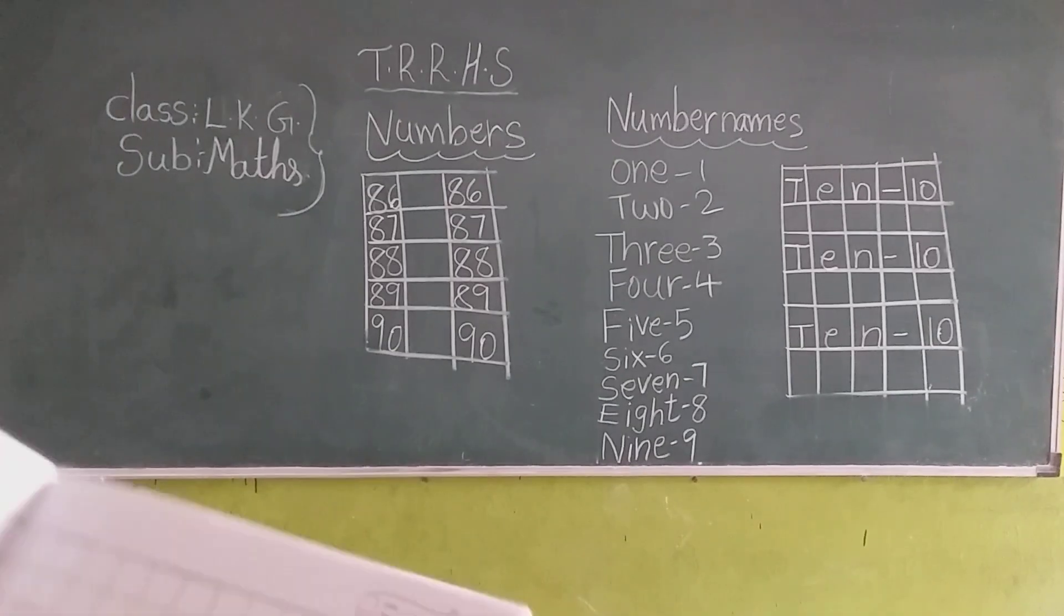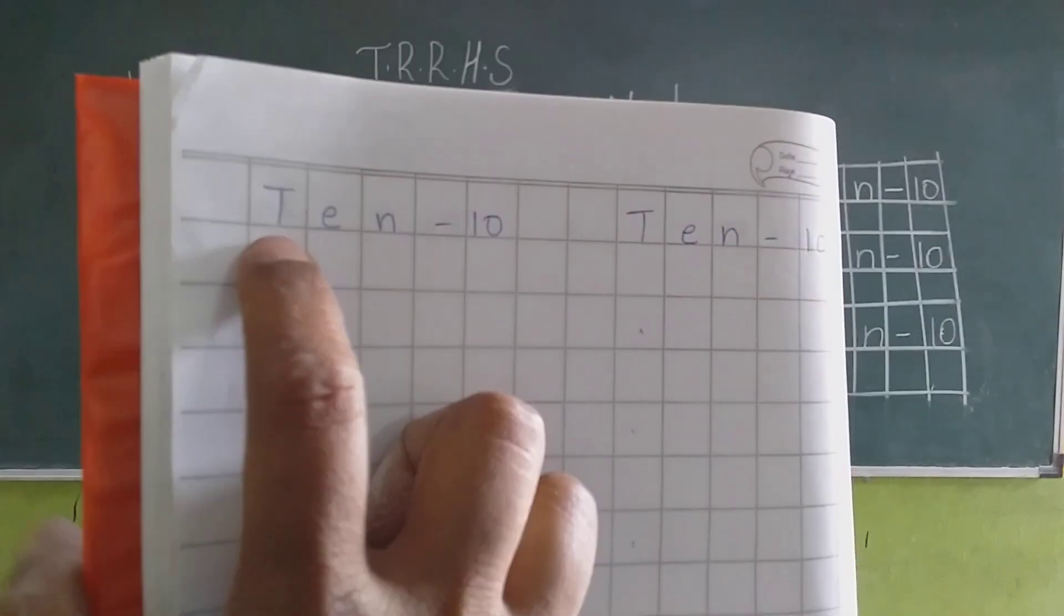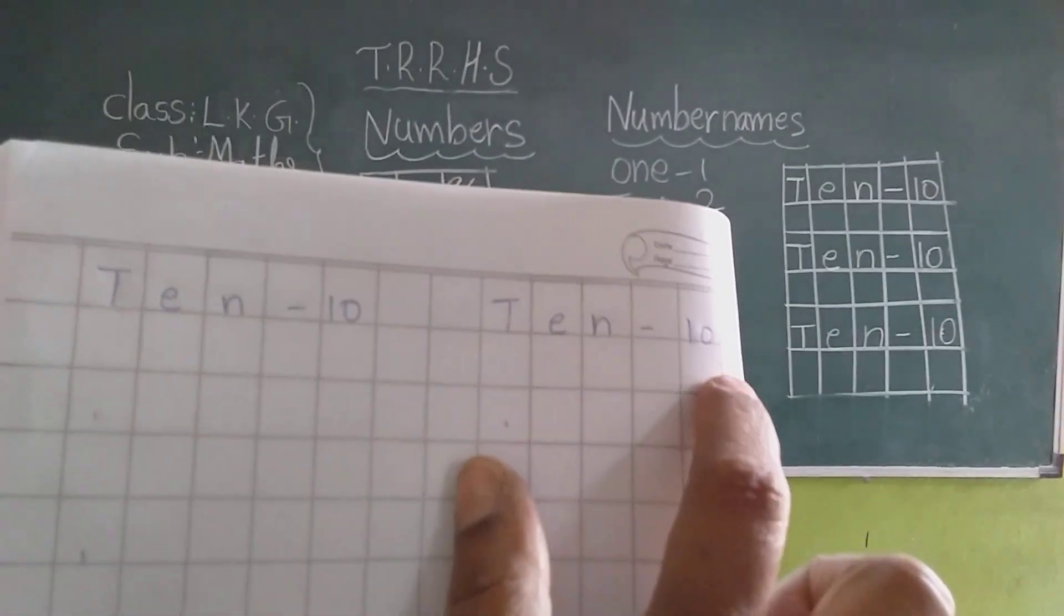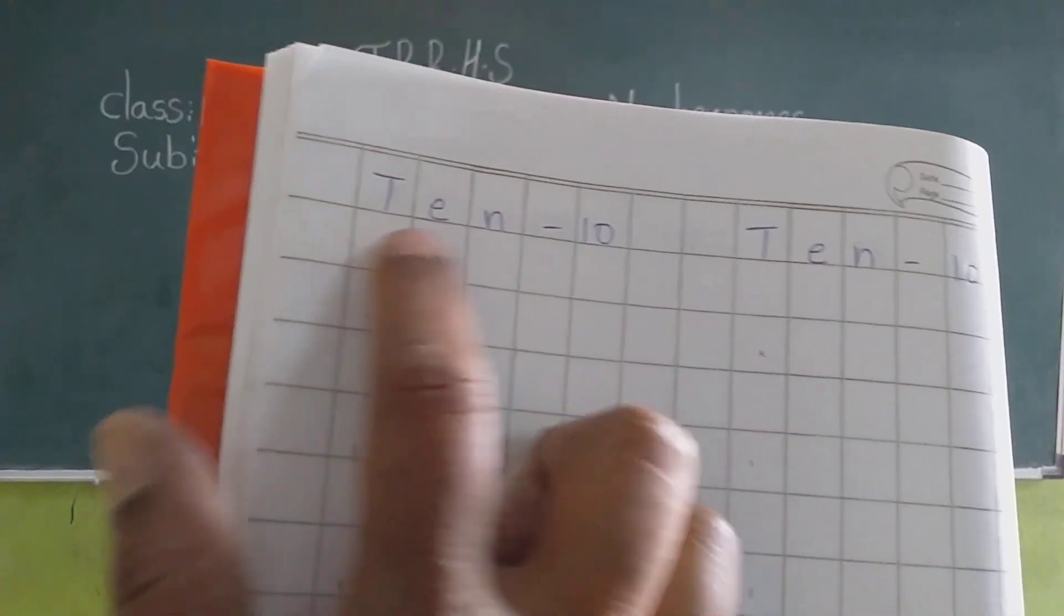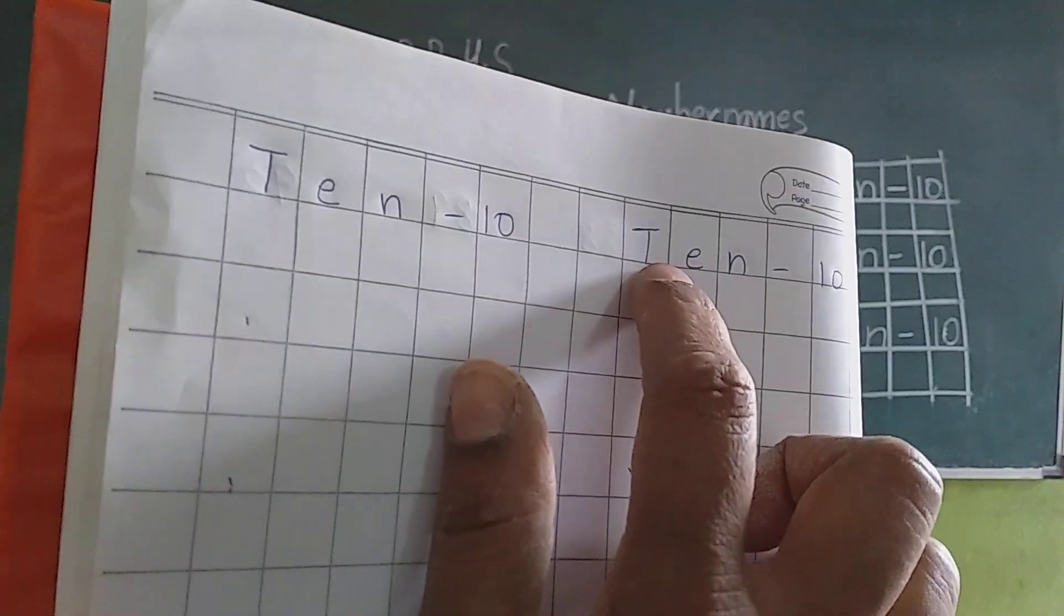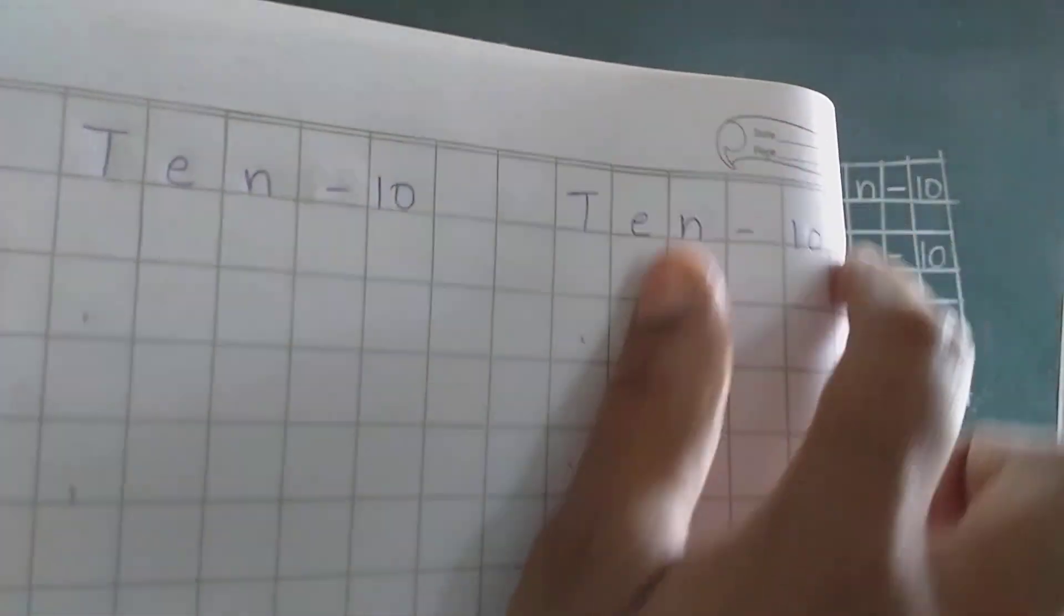After that, today which number name we learned? Yes, 10. T, E, N, 10. T, E, N, 10. Like this you have to write. First T, E, N, 10, write and leave two boxes. Again write T, E, N, 10, dash 1, 0, 10. Like that you have to write.